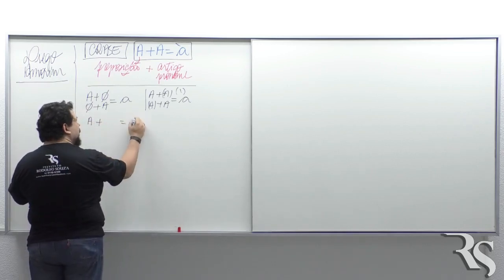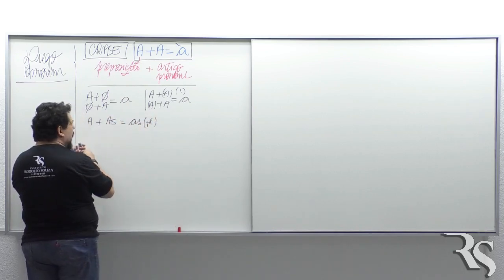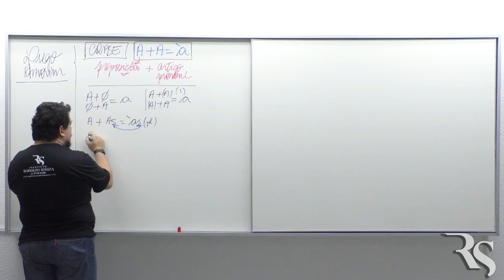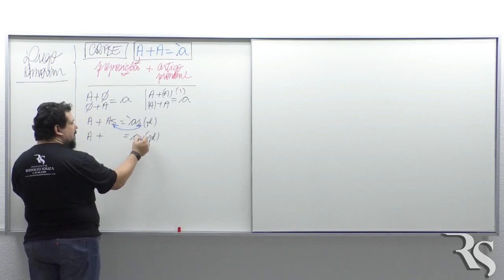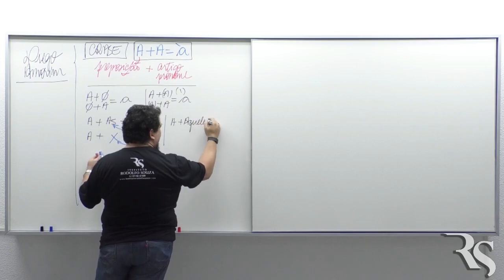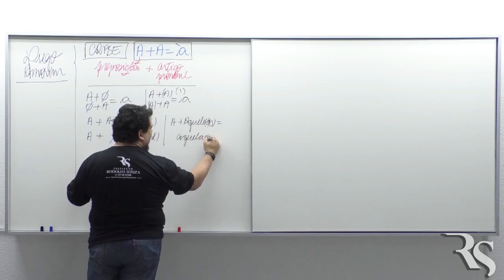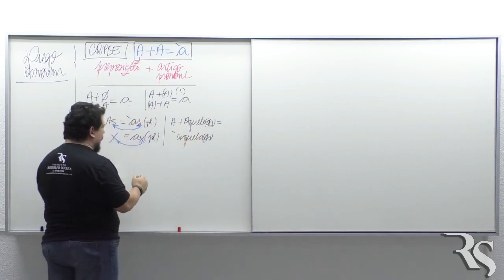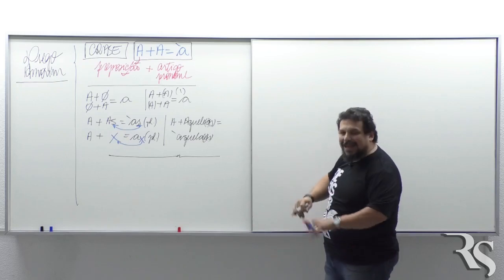Se um dos As for facultativo, é porque a crase que você está vendo também é facultativa. Se não tem um A, não tem crase. Se um deles for facultativo, põe suas dúvidas aí que a gente vai resolver. Imagina se o final, com a palavra aqui no plural, for As. Esse S prova o uso do As, então eu vou ter crase.